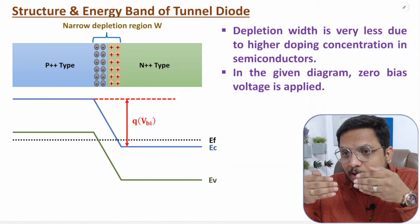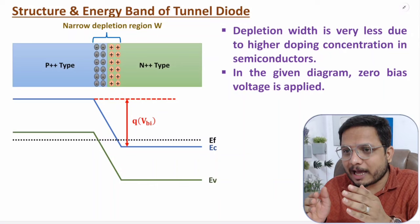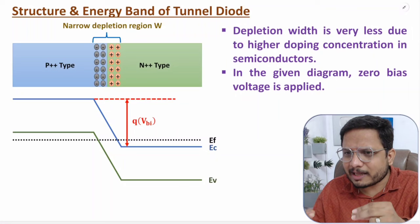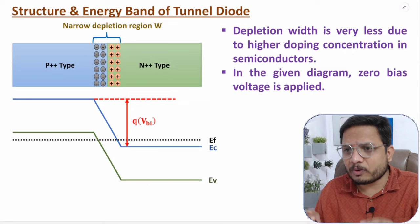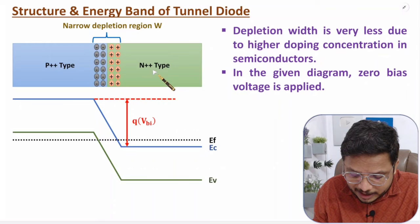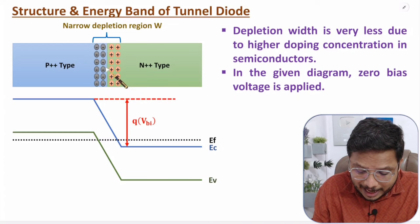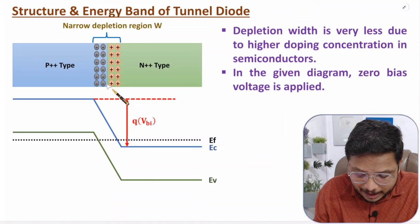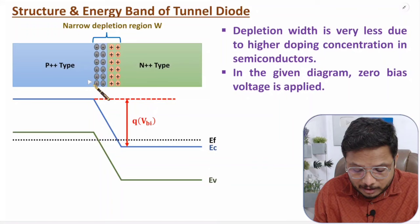In tunnel diode we diffuse P and N material together and that forms a depletion region. The depletion region width in tunnel diode is very slim because the doping concentration of P and N type material is very high. At the P type side there are negative ions as it accepts electrons, and at the N type side electrons are donated. So ions are generated and this region is the depletion region, whose width is very narrow due to the high doping concentration.